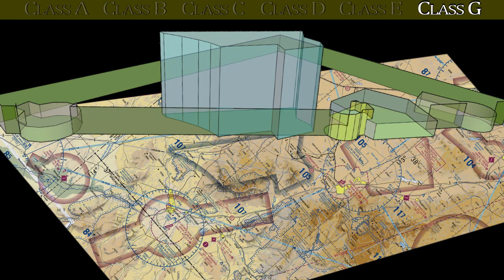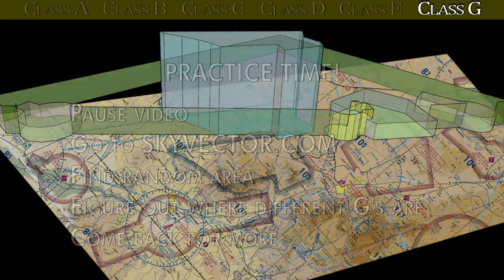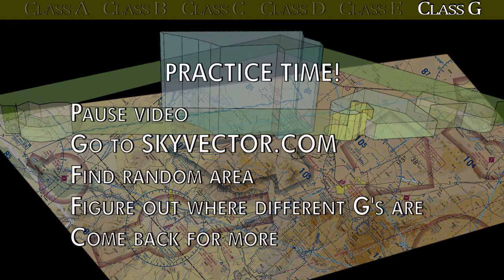Before continuing, pause the video, go to SkyVector, zoom into a few random parts of the country, and try to find class G airspace. See if you can figure out how high it goes in each region you find. This is very important because everything else will build on it — if you don't know where class G airspace is, you'll be lost for the rest of the video.